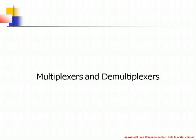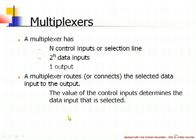In this session we will discuss about multiplexers and demultiplexers. A multiplexer has N control inputs or selection lines, 2^N data inputs, and one output line. A multiplexer is a circuit which accepts 2^N data inputs along with N control inputs and produces only one output. Out of these 2^N inputs, one input line is routed to the output, and the selection of this input depends on the control inputs or selection lines.